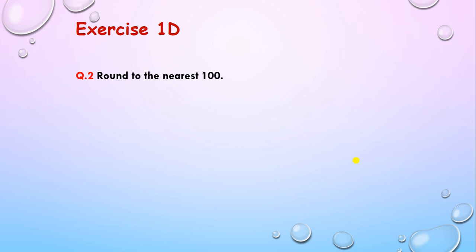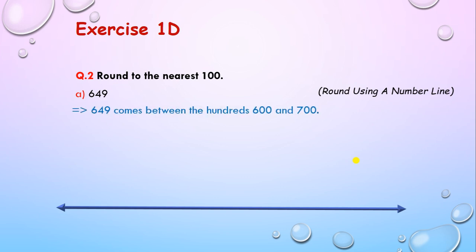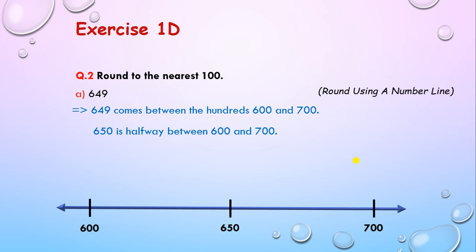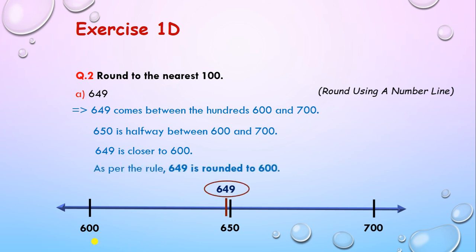Question 2: round to the nearest 100. The first number is 649. We will use a number line. Let's draw a number line and check between which two hundreds the number comes — it comes between 600 and 700. The halfway number is 650. Placing 649 on the number line, it comes just before 650, so 649 is closer to 600. Therefore, 649 is rounded to 600. The answer is 600.